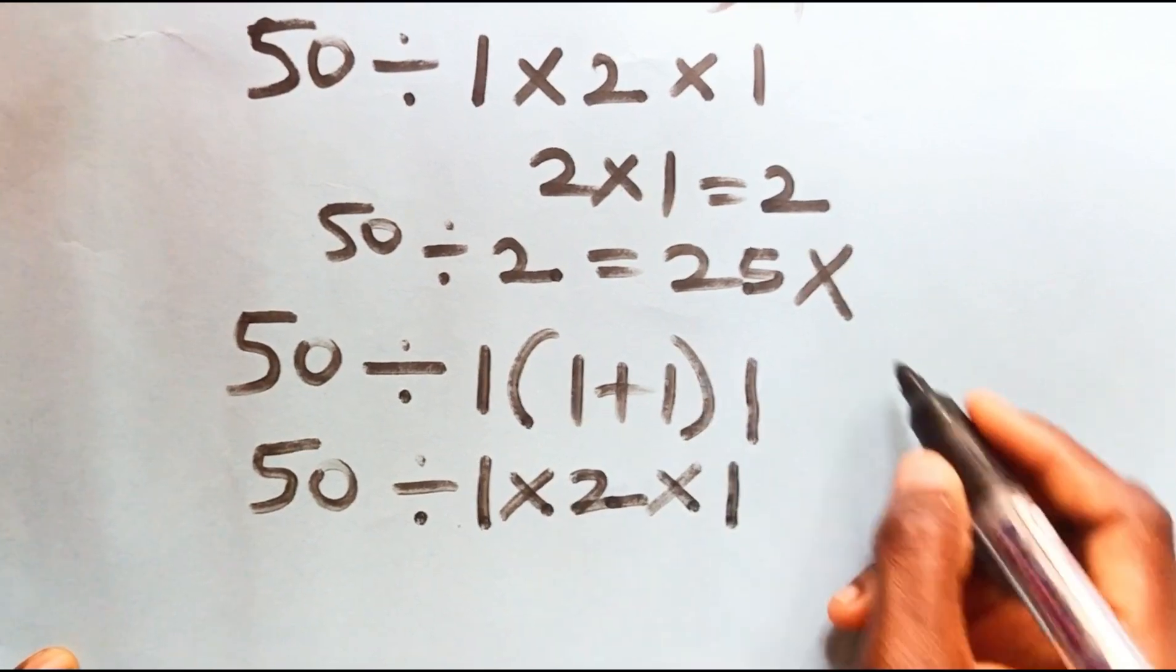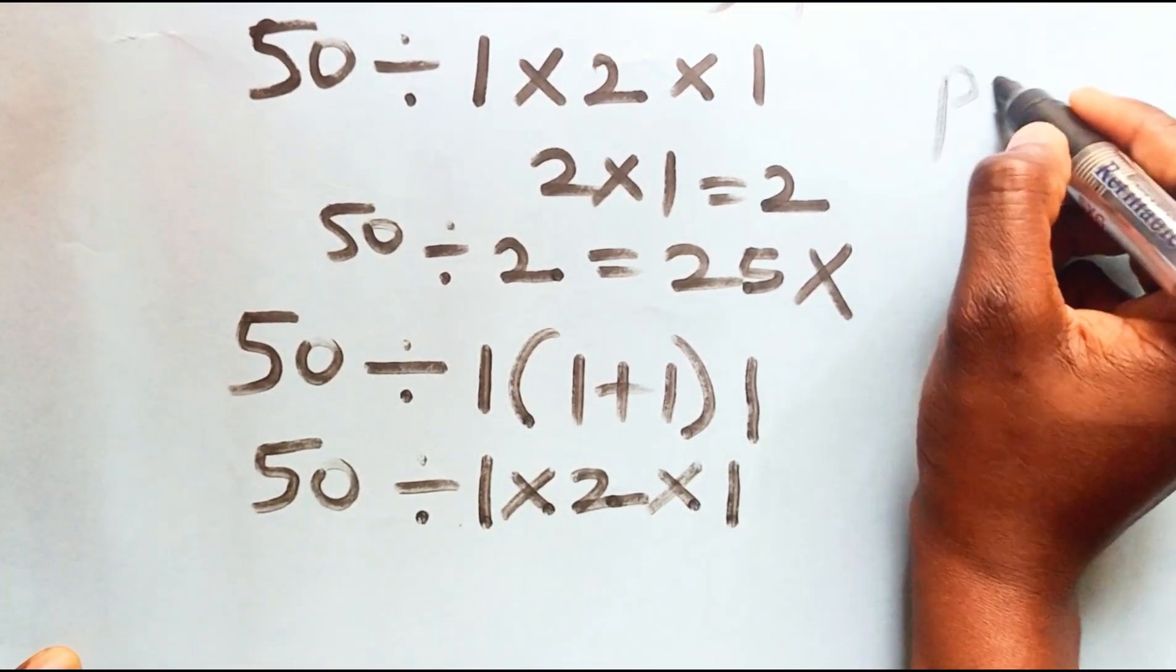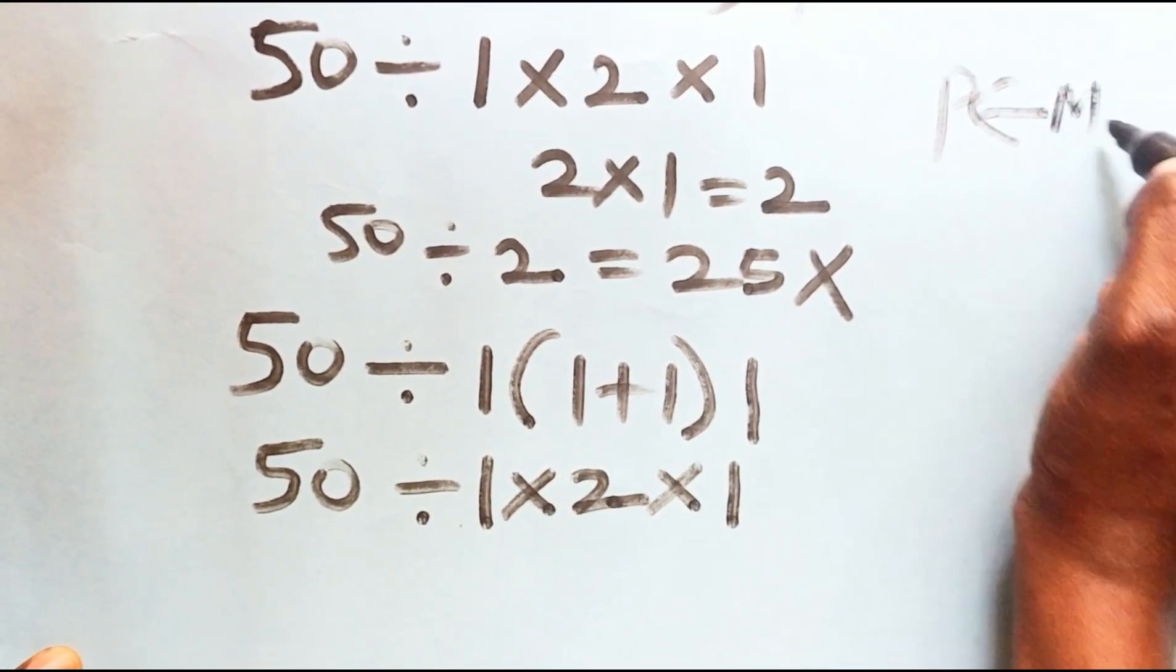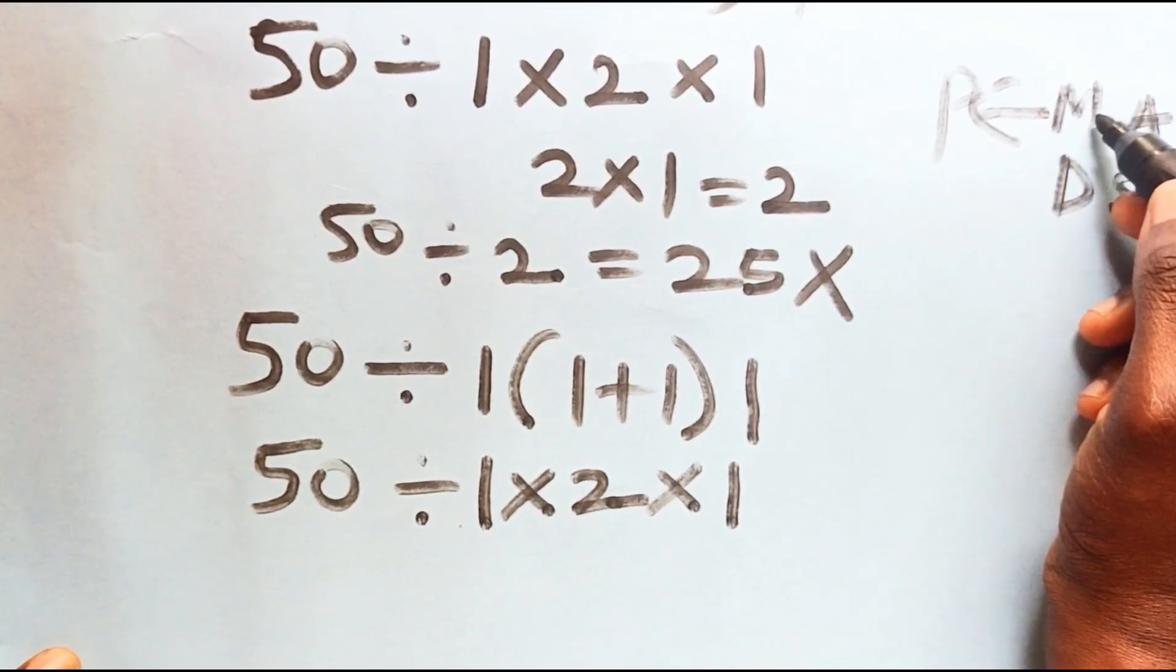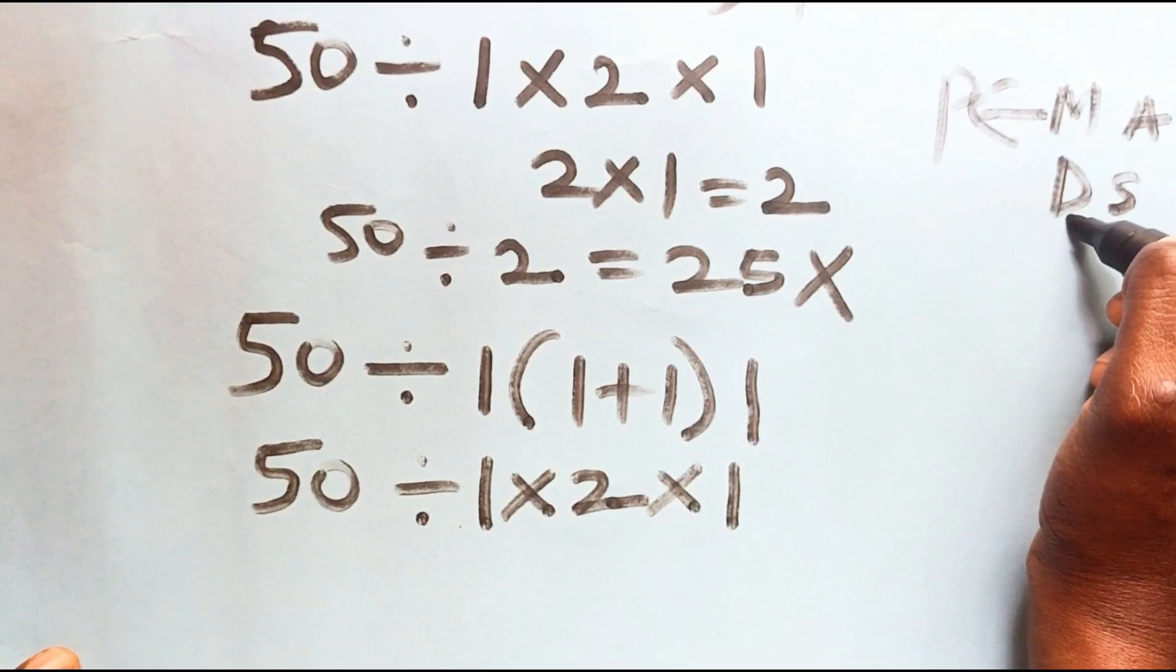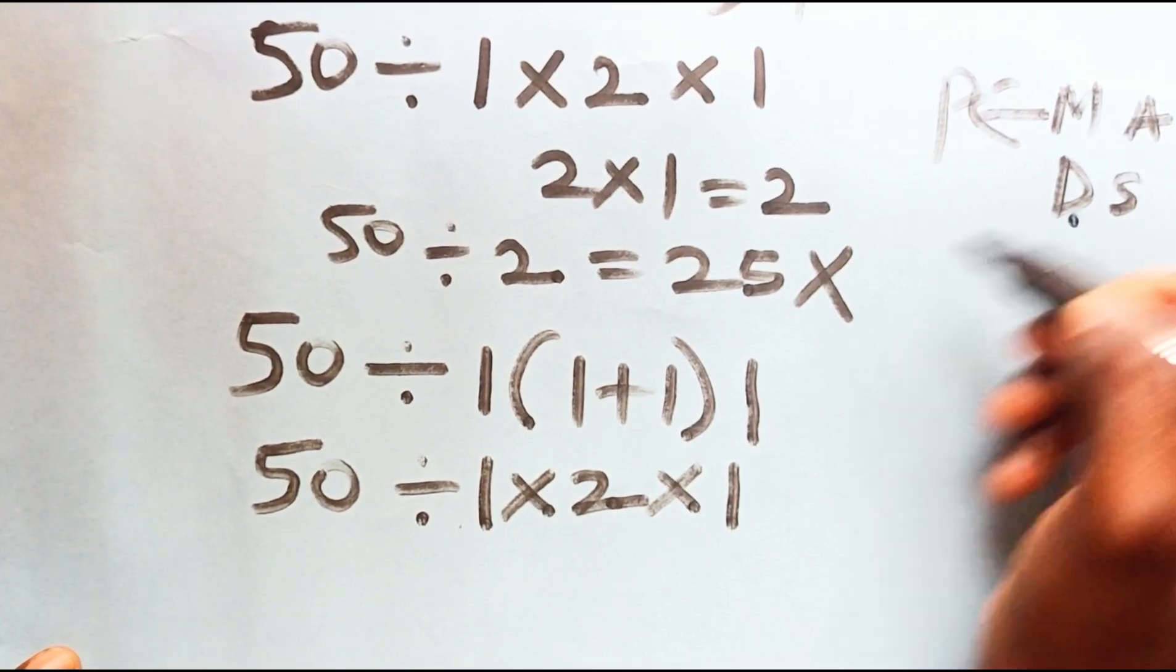If you follow PEMDAS, multiplication and division have equal priority from left to right. So starting from left to right here, we're going to solve the division before the multiplication.